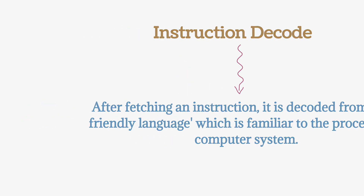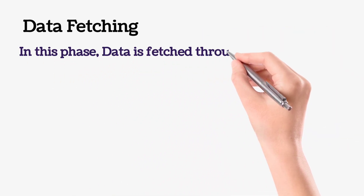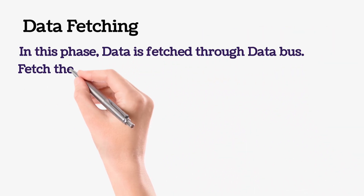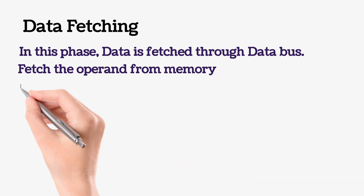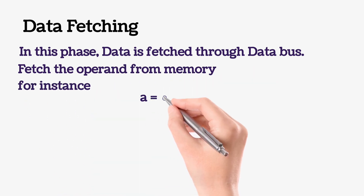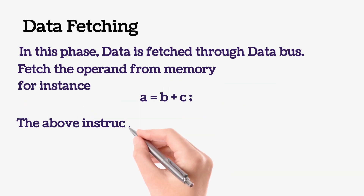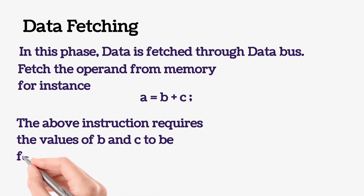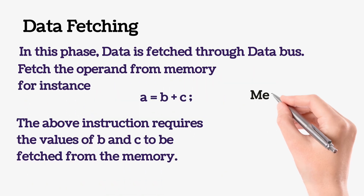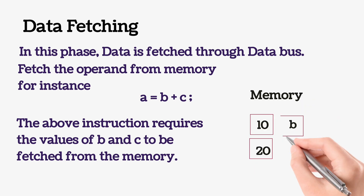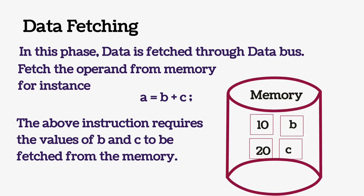Coming to the next phase: data fetching. In this phase, data is fetched through the data bus. The operand is fetched from the memory. For instance, for the instruction a = b + c, the above instruction requires the values of b and c to be fetched from the memory.